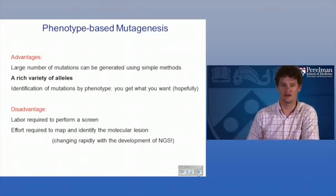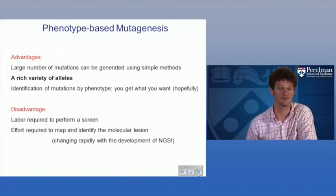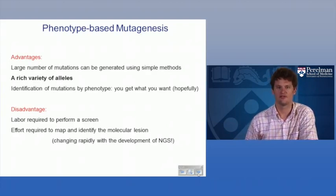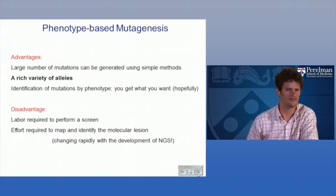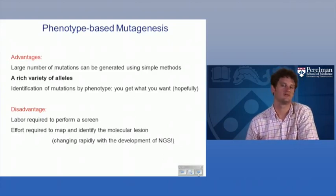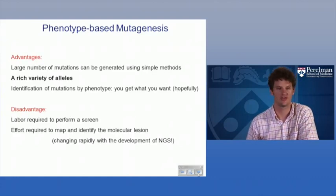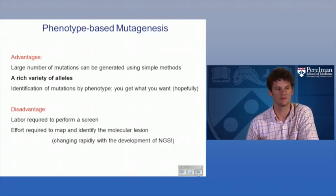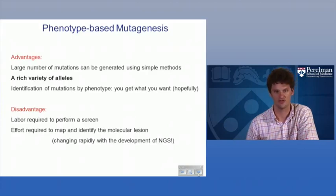The disadvantages: it's a lot of work to perform a screen, sometimes taking months of lab effort. And once you identify mutants with relevant phenotypes, there's considerable effort to figure out what's actually wrong. In mouse ENU mutagenesis, one out of 700 genes is affected, meaning thousands of sequence changes per mutant. Traditionally you'd use linkage studies and fine mapping to find the causal mutation. Next-generation sequencing approaches have provided new ways to identify mutants, which we'll discuss later.